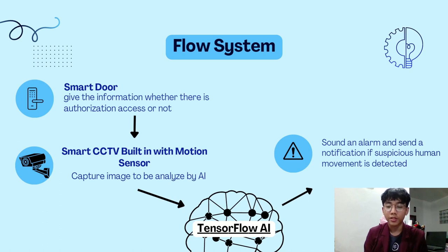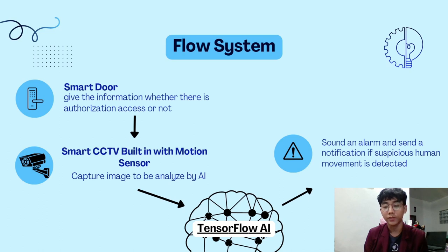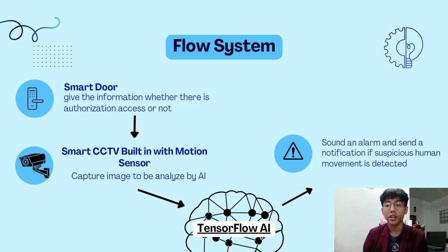After that, it goes to be analyzed. If there is a suspicious movement — which is human movement — detected, it is going to sound the alarm. If there is no suspicious movement, for example an animal movement, it is not going to sound the alarm and not going to send another image. So this is the flow of the system.